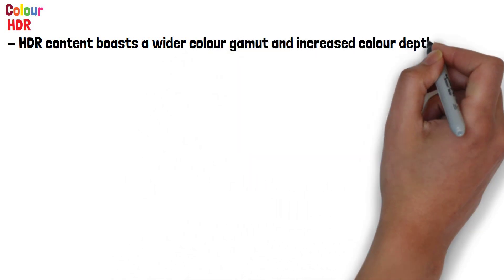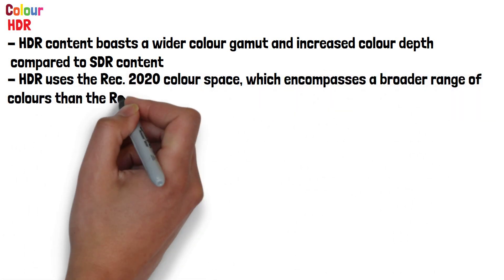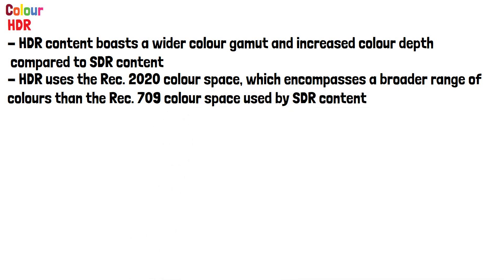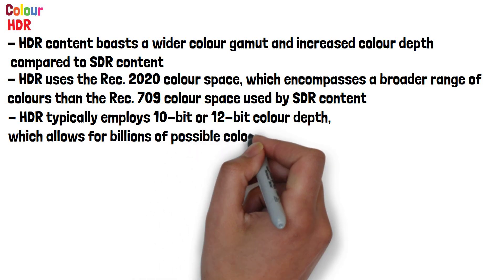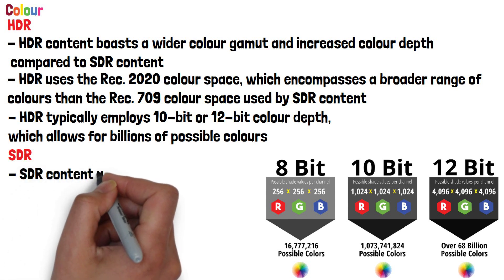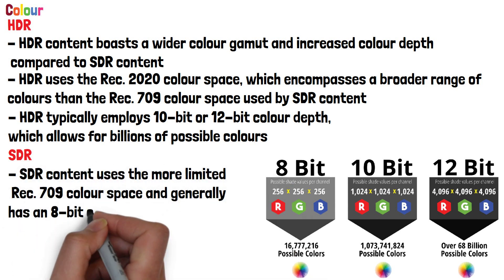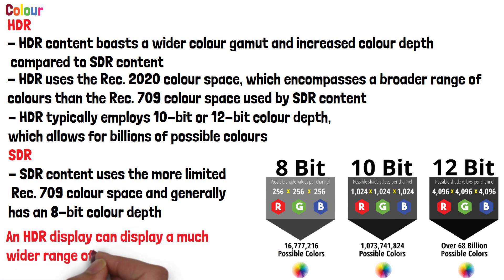And finally, let's look at color. HDR content boasts a wider color gamut and increased color depth compared to SDR content. HDR uses the REC 2020 color space, which encompasses a broader range of colors than the REC 709 color space used by SDR content. Additionally, HDR typically employs 10-bit or 12-bit color depth, which allows for billions of possible colors. This increased color depth results in smoother gradients, reduced banding artifacts, and more vibrant lifelike colors. SDR content uses the more limited REC 709 color space and generally has an 8-bit color depth. The limited color gamut and lower color depth lead to fewer colors being represented, which can cause images to appear less vibrant and display visible banding in color gradients. In short, an HDR display can display a much wider range of color than an SDR one can.